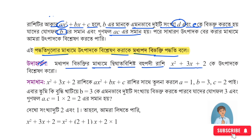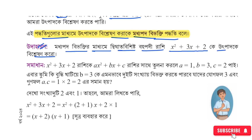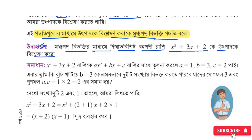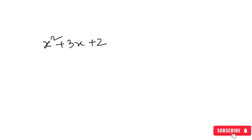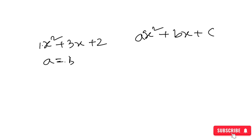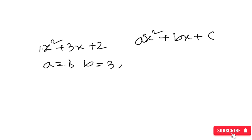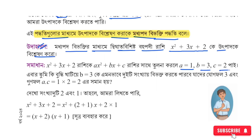x squared plus 3x plus 2. I am going to show you how to do this for the first time. If we do this, we have x to b, b is equal to c, and c is equal to 2. We have the value of 1 equal to c. We have the value of 1 equal to c. Now we have to understand that the value of 1 is equal to 2.